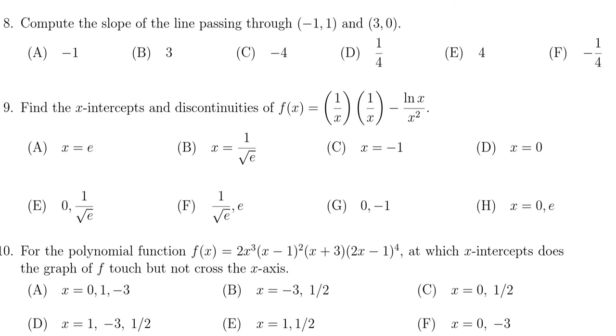In this video, we provide the solution to question number 8 for the practice final exam for Math 1050. We have to find the slope of the line that passes through the points (-1, 1) and (3, 0).